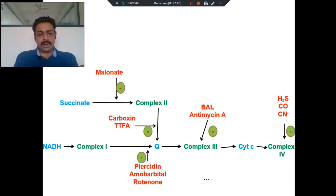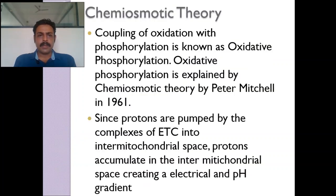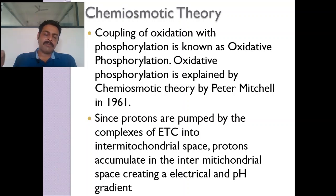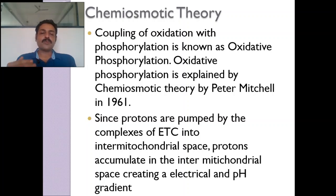We will come to oxidative phosphorylation. The coupling of oxidation with phosphorylation is known as oxidative phosphorylation — removal of hydrogen and mixing of oxygen is called oxidation, and during this process energy should be liberated by creating ATP from ADP plus phosphate, so it is called phosphorylation. Coupling both oxidation and phosphorylation is called oxidative phosphorylation. This theory was put forth by Dr. Peter Mitchell in 1961.